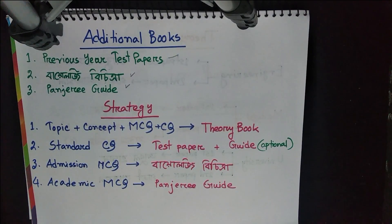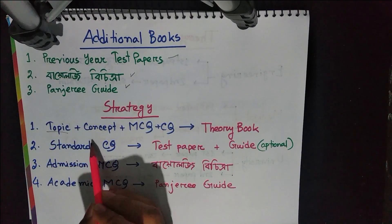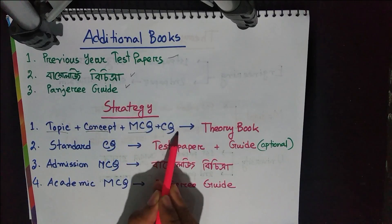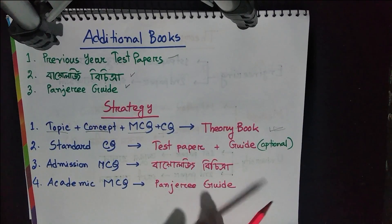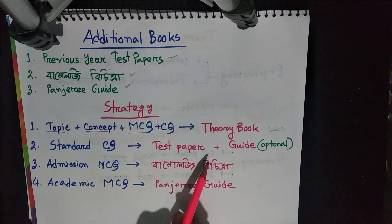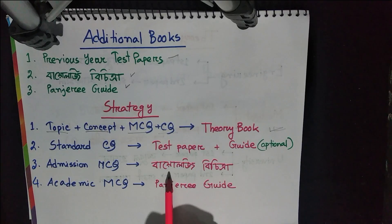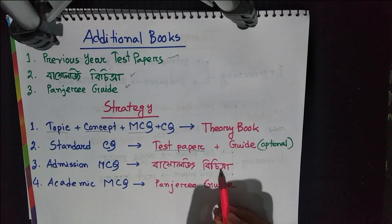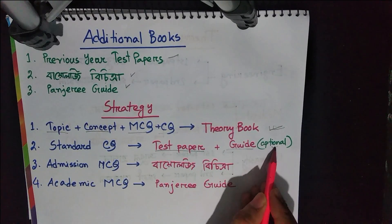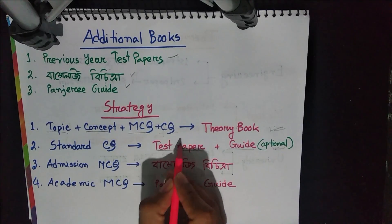Ok, so bhoi ghoi aamra kaalit kola ma — ea bhaar amana dhekbhoa kii bhoi ghoi aamra pori tht hobwe. This topic — the fundamental topic, concept, MCQ, CQ — this topic is primarily called theory book. The theory book, I will tell you, this book is suggested. This is the standard CQ. This is the test paper. For the test paper, you have enough time to practice, so you can get the guide to it. It is optional. But the test paper is the best.